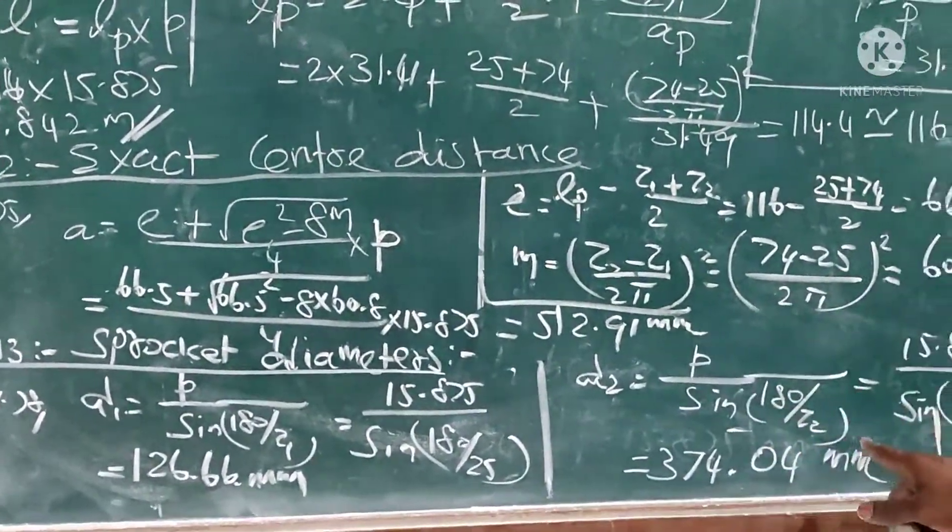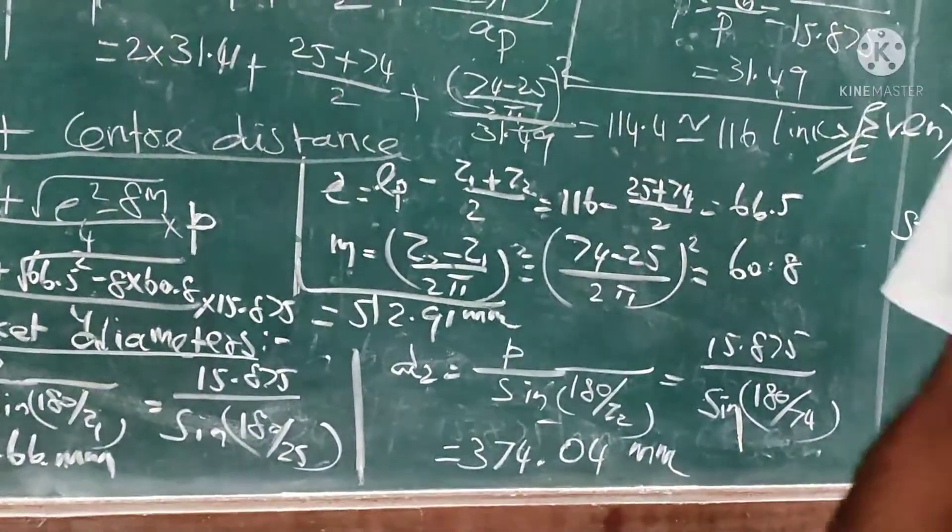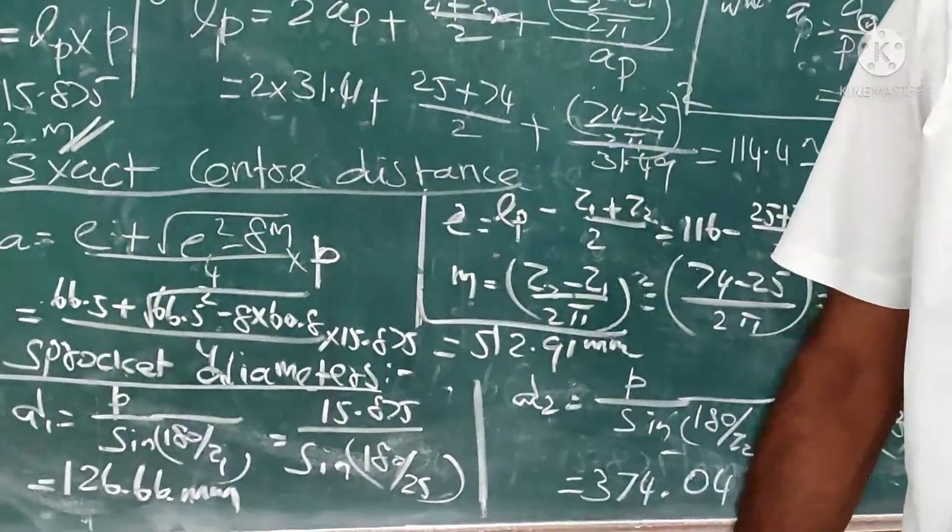D2 = P/sin(180/z2), that is the diameter of the driven sprocket. We get 374.04 millimeter. OK, so thanks for watching.